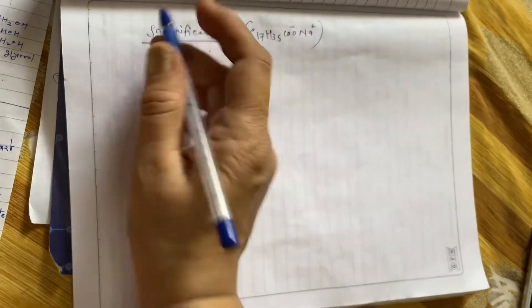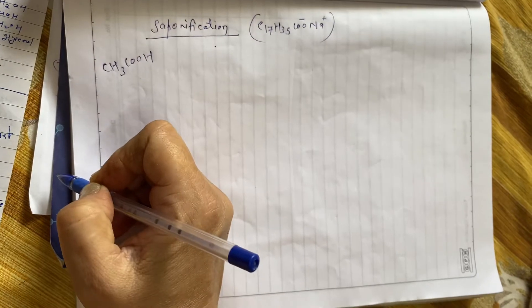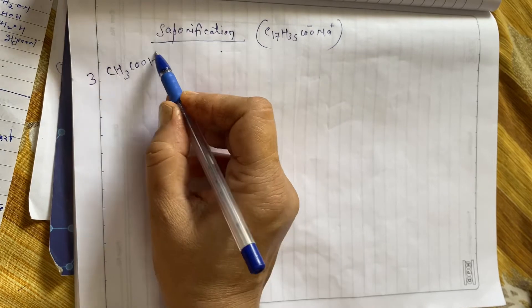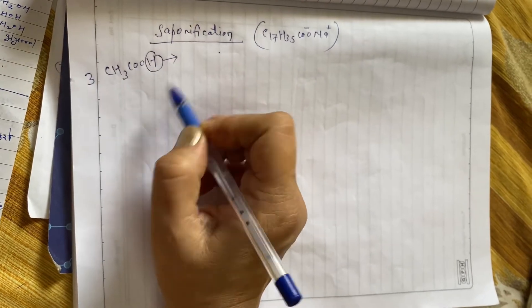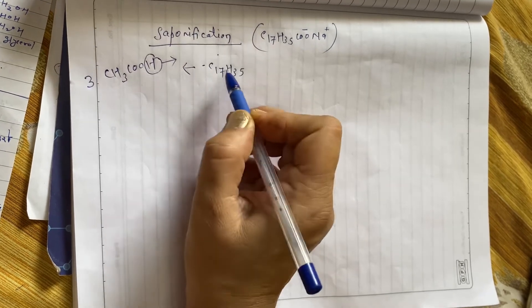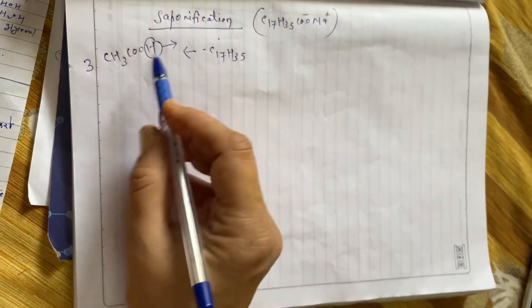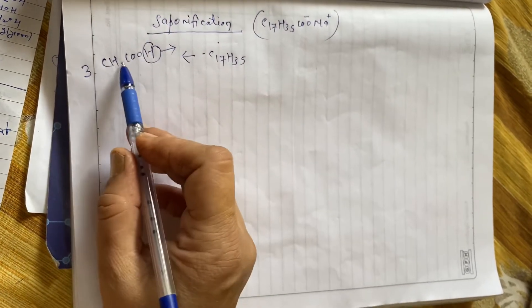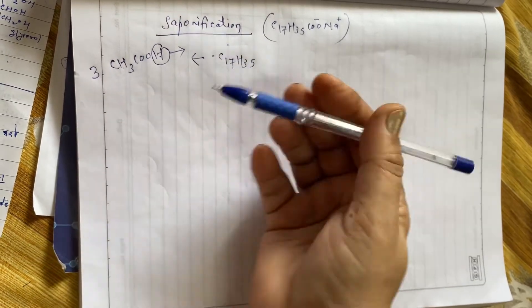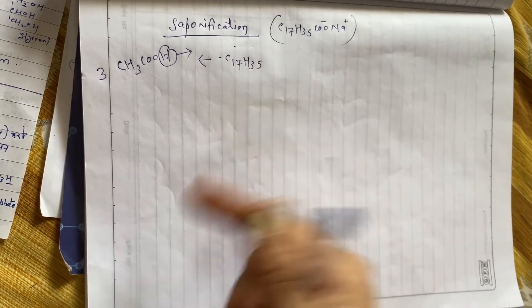Sabse pehle: acetic acid tumko maloom hona chahiye — CH3COOH. Ab kya karo? Iski 3 particles le lo. Ab kya karo? Is mein se is edge ko remove kar do aur iski jagah aane do C17H35. Long hydrocarbon ek alkyl group hai jo is edge ko replace karega. Aise 3 acetic acid lo aur hydrogen ko remove karo C17H35 se, aur 3 acetic acids ke particles ko aapas mein jod do. To woh kya ho jayega? Stearic acid ya fat ya oil.